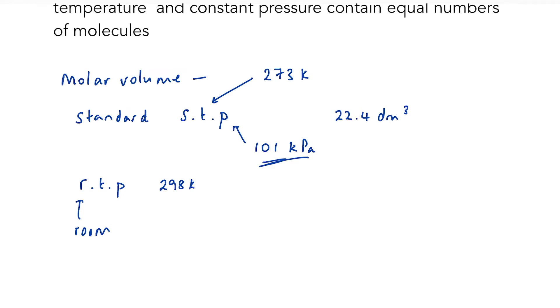In that case, the molar volume is 24.0 decimetres cubed. So what we're saying is that if I've got one mole of any gas at 298 K and 101 kilopascals worth of pressure, it will occupy a space of 24.0 decimetres cubed.